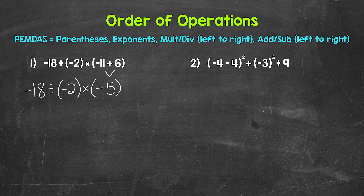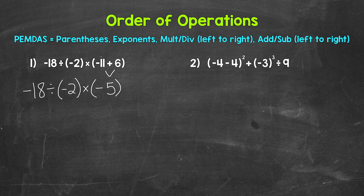I left negative 18 without parentheses because it's in the front and the negative is clear, but we can put it in parentheses as well. Continuing through the order of operations: no more parentheses, no exponents. Do we have any multiplication or division? Yes, we actually have both. Multiplication and division are the same priority, so we work from left to right. Division comes first: negative 18 divided by negative 2 — a negative divided by a negative gives us a positive — so that equals positive 9.